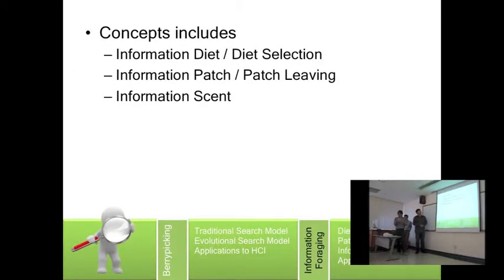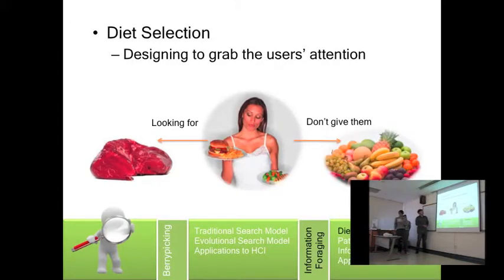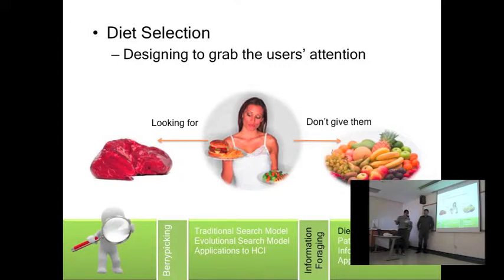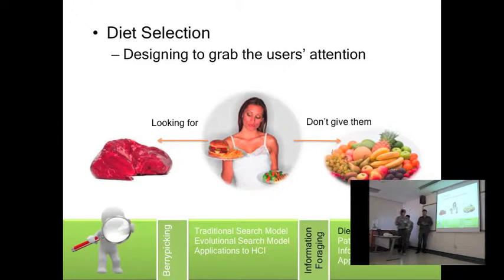There are a few concepts covered in Information Foraging; for this presentation we will cover diet selection, patch living, and information scent. Diet selection is basically about selecting the correct content and making it obvious for users to find. For example, if a user is looking for a recipe to cook meat and you are a developer of a recipe website with a subgoal to promote healthy ingredients, you would not want to bombard the users with healthy ingredients straight away. A better way would be to make the majority of your website give the recipe, then make a small section to recommend healthier food.